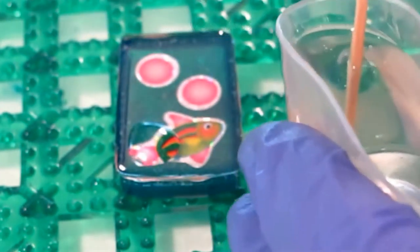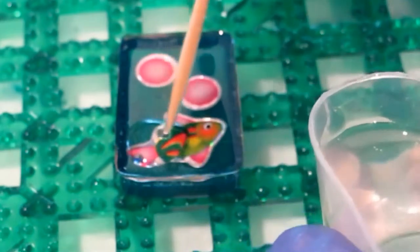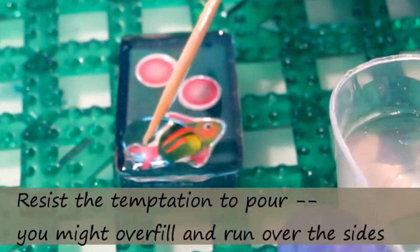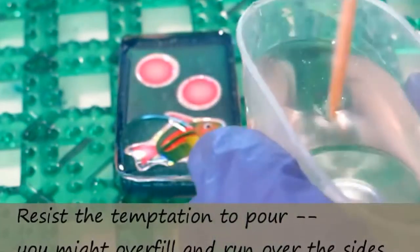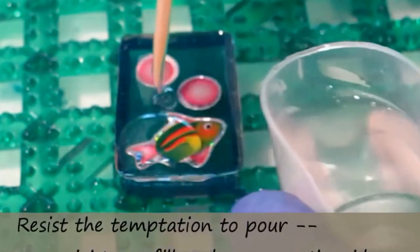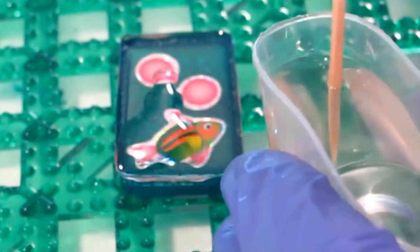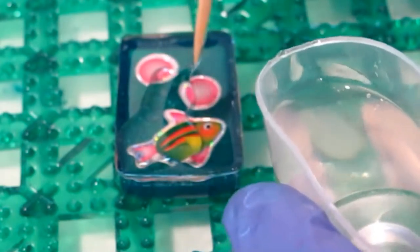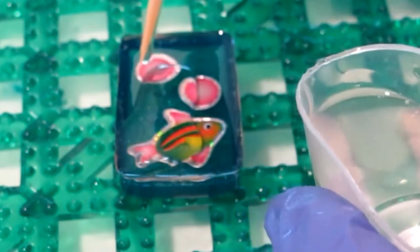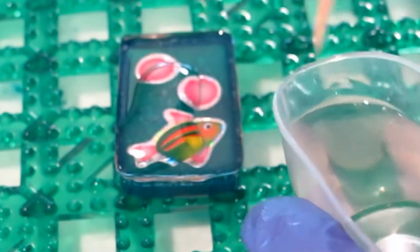and that lip is going to help you keep your resin in place. So use a toothpick or something similar, and just dab it in there, and then you can actually use the toothpick to help draw it to the edge.